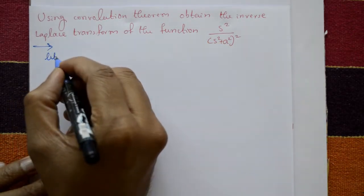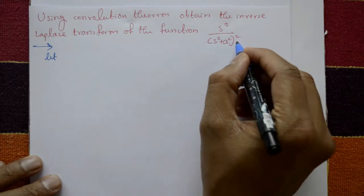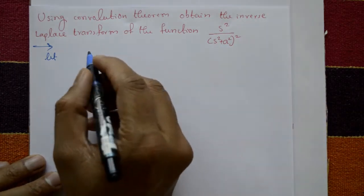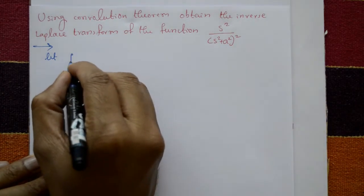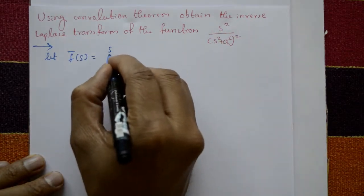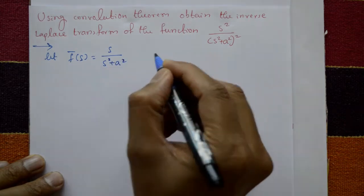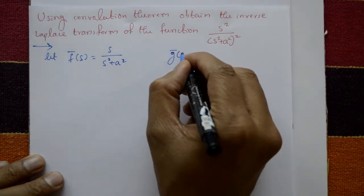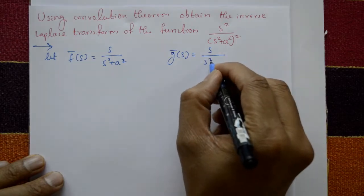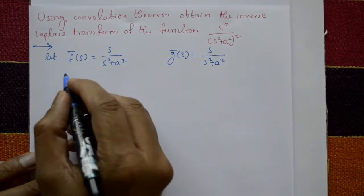We have s² upon (s² + a²) whole square. We split this into F̄(s) and Ḡ(s). F̄(s) is taken as s upon (s² + a²), and Ḡ(s) is again s upon (s² + a²).